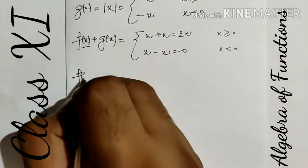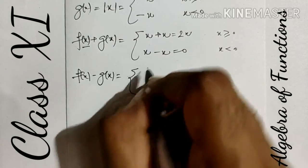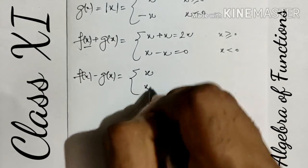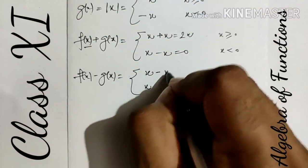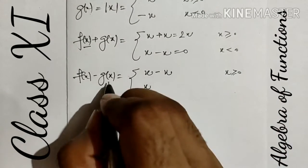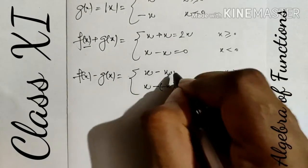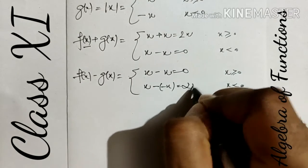Next we have to calculate the difference of these two functions. f(x) value is fixed, no change. f(x) - g(x): when x ≥ 0, we get 0. When x < 0, g(x) value is -x, so it becomes overall 2x.